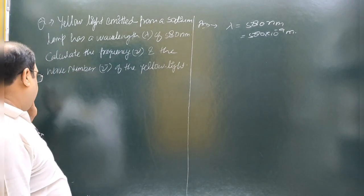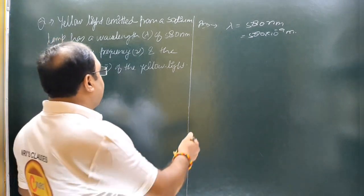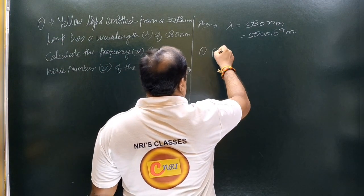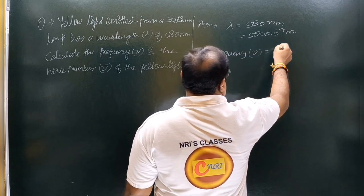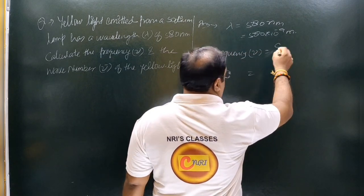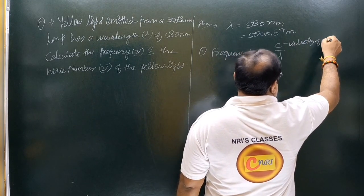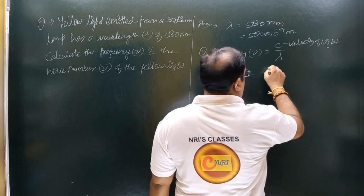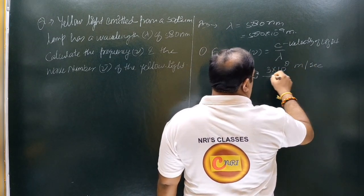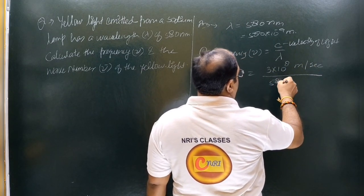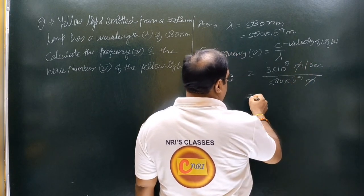अब इसके बाद frequency calculate करते हैं। Frequency ν equal to c by lambda. c, velocity of light, की value 3 into 10 to power 8 meter per second आएगी, और lambda की value 580 into 10 to power minus 9 meter आएगा। Meter meter cancel out हो जाएगा।